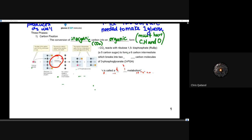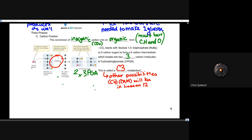CO2 reacts with that five-carbon RuBP to form a six-carbon intermediate, which then breaks into two three-carbon molecules of 3-phosphoglycerate (3-PGA). This is called C3 metabolism. There are other possibilities — C4 and CAM metabolism — which we'll look at in lesson 12. C3 means the intermediate formed is a three-carbon or C3 molecule.